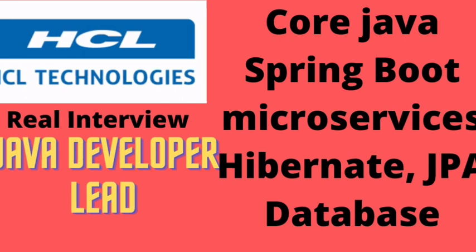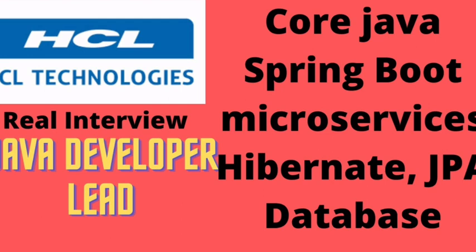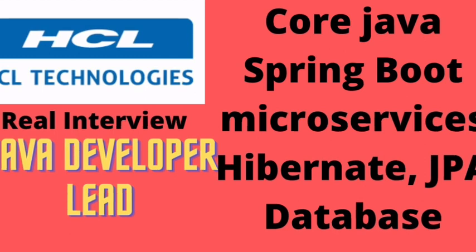Interviewer: How does garbage collection work? Candidate: When we create any reference or object and after use it is in an idle state, so it will clean that and recover the memory. When JVM is running and it detects that memory is running low, it will generate a flag and then JVM starts the garbage collection. Garbage collection wakes up and cleans unused variables, and using that it creates space for our program.